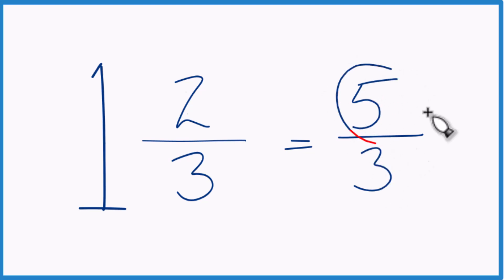The numerator 5 is greater than the denominator 3, and these are equivalent. 1 and 2 thirds, that's equal to 5 thirds. They're just different representations.